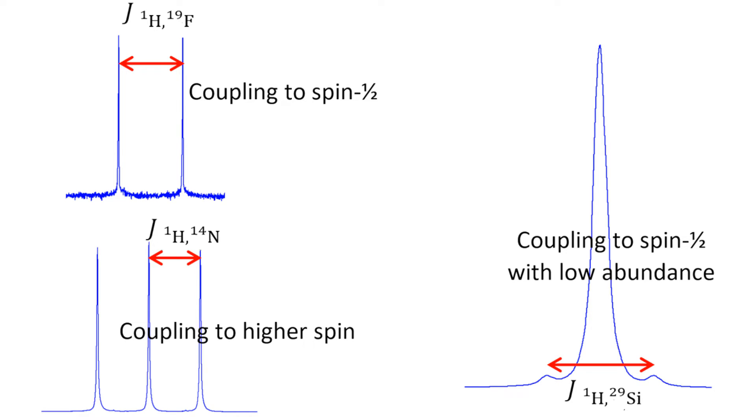Fluorine-19, phosphorus-31, and rhodium-103 are the only spin-half nuclei with 100% natural abundance. Their coupling to protons looks the same as homonuclear coupling, such as one fluorine splits a proton signal into two peaks.